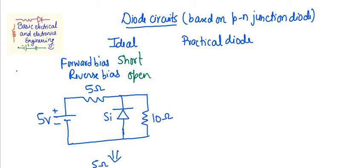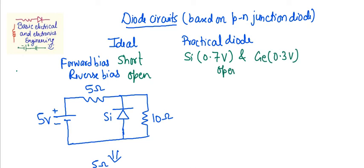For the practical case, the drop across the diode equals the cut-in voltage. For a silicon diode the drop is 0.7 volts, and for a germanium diode the drop is 0.3 volts. For reverse bias, it is again an open circuit condition.